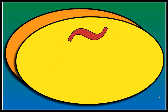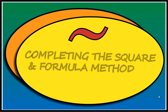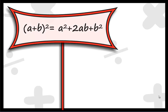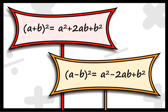Today's topic is Completing the Square and Formula Method. To begin with, you surely should know some identities: a plus b the whole square equals a square plus 2ab plus b square; a minus b the whole square equals a square minus 2ab plus b square.